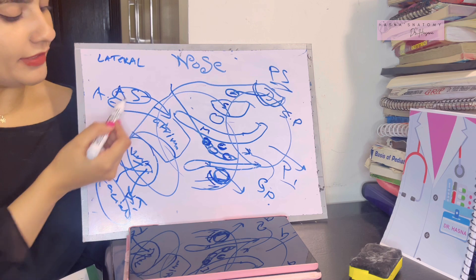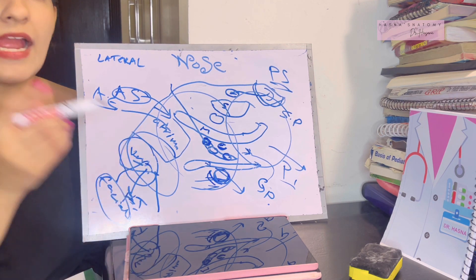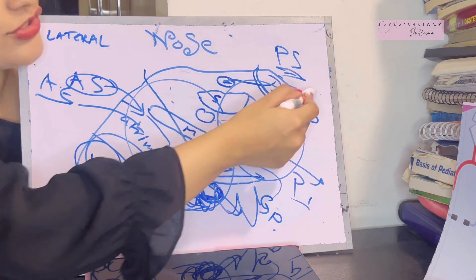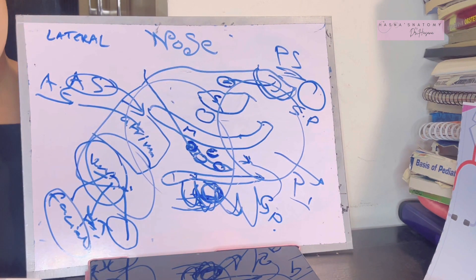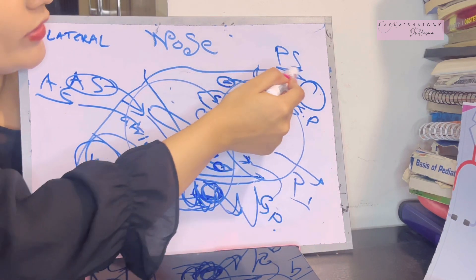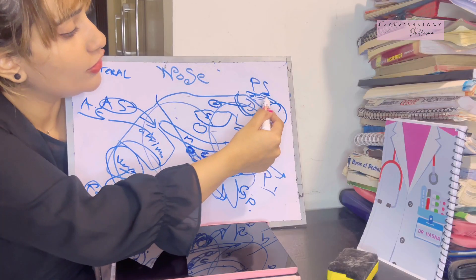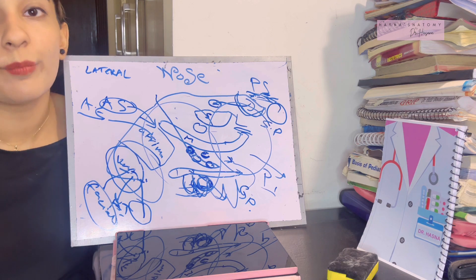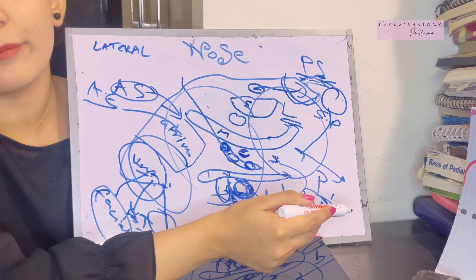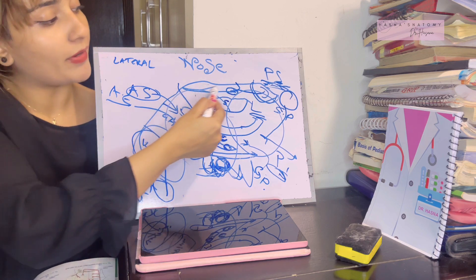For nerve supply: antero-superiorly, the anterior ethmoidal nerve. Antero-inferiorly, the anterior superior alveolar nerve. The postero-superior quadrant is supplied by branches from the pterygopalatine ganglion — specifically the lateral posterior superior nasal branches of the pterygopalatine ganglion. The postero-inferior quadrant is also supplied by the pterygopalatine ganglion's anterior palatine branch. Special nerve supply is provided by the olfactory nerves in the upper part of this area.